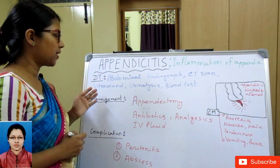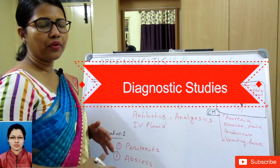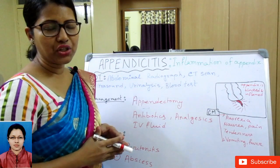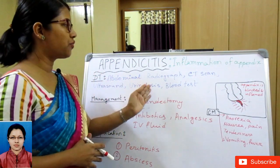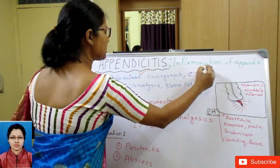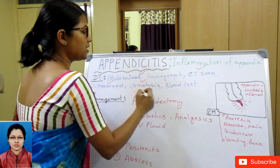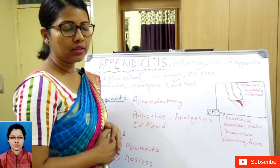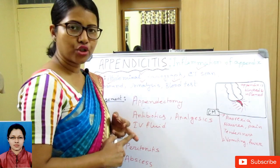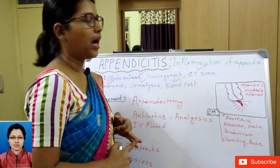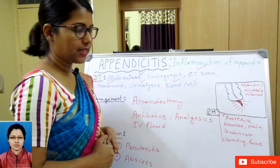For diagnostic studies, we start with proper history collection and physical examination, then proceed to abdominal radiograph, CT scan, ultrasound, and urinalysis. The WBC count and leukocyte count should be checked. The neutrophil count will be elevated. These are the diagnostic studies done for appendicitis.